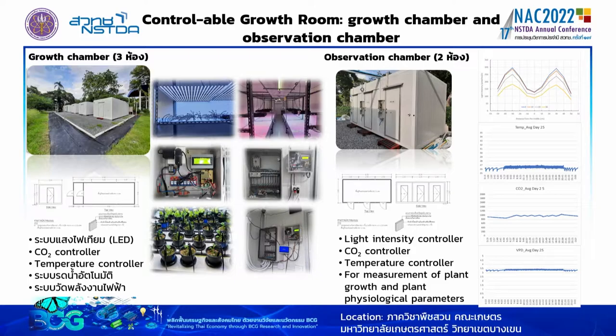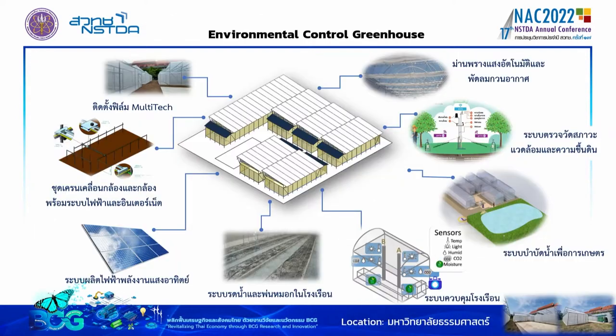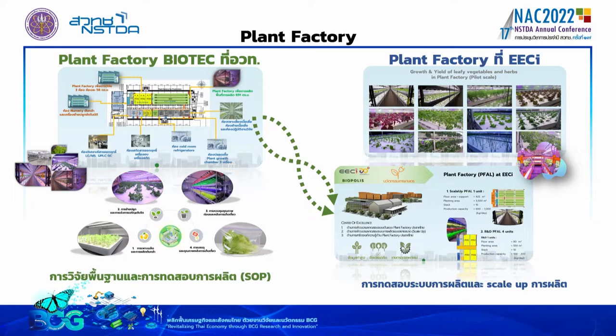The 3rd plan is the environmental control greenhouse, built in the BWMHT. This project can be used to control the carbon dioxide and the energy of the EECI plant, including control of carbon dioxide and internet-connected systems.